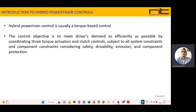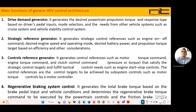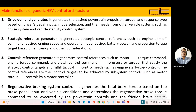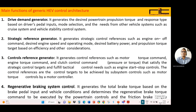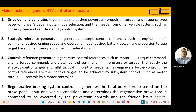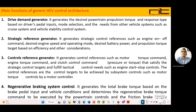The main functions of hybrid electric vehicle control architecture are: first, the driver demand generator. It generates the desired powertrain propulsion torque and response type based on driver's pedal input, mode selection, and the needs from other vehicle systems such as cruise control and vehicle stability control system.